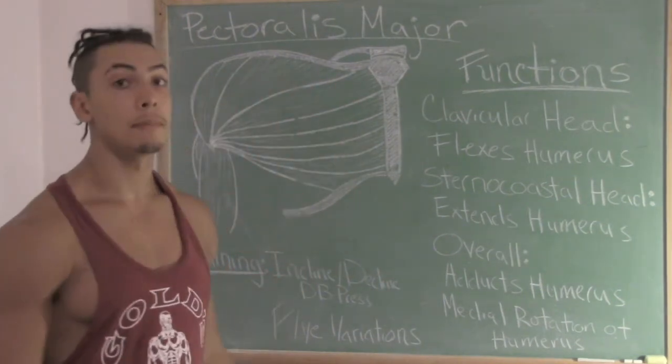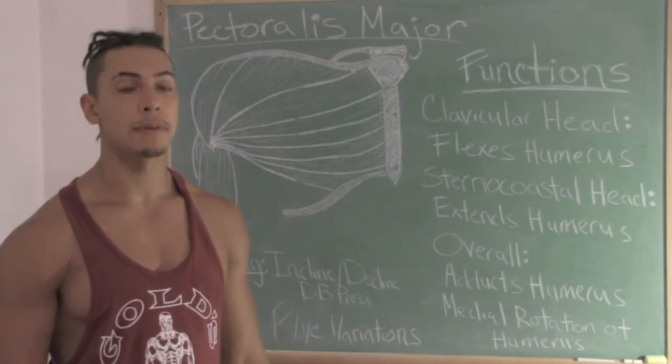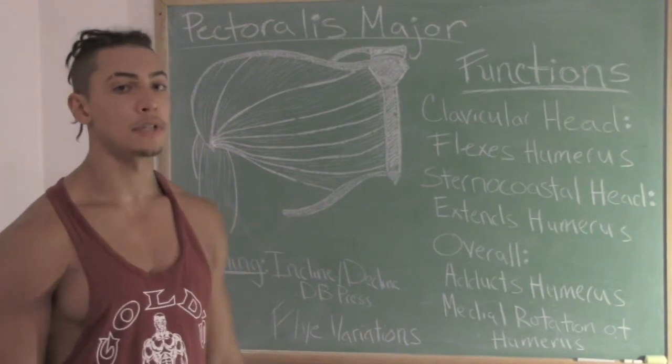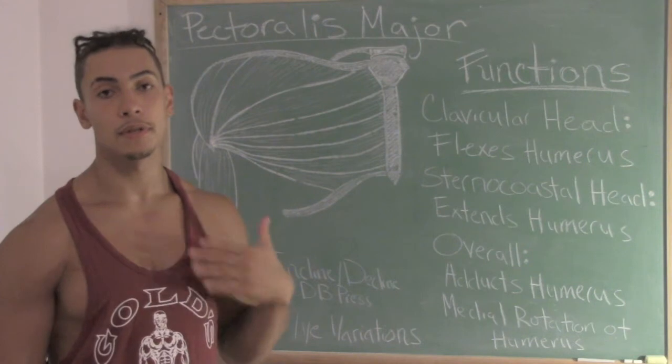The pectoralis minor, even though it's considered a chest muscle, lies underneath the pectoralis major and you can't see it visibly from the surface.